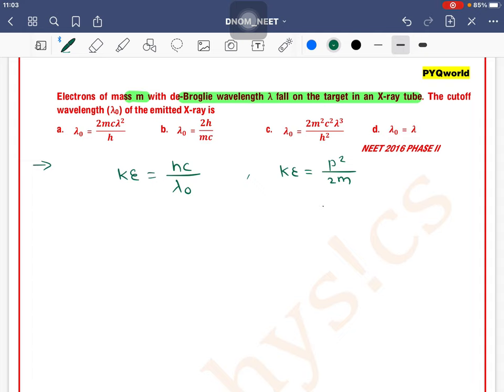We know that de Broglie wavelength and momentum relation is p equals h by lambda. So kinetic energy is equal to h squared divided by 2m lambda squared. This is the kinetic energy.